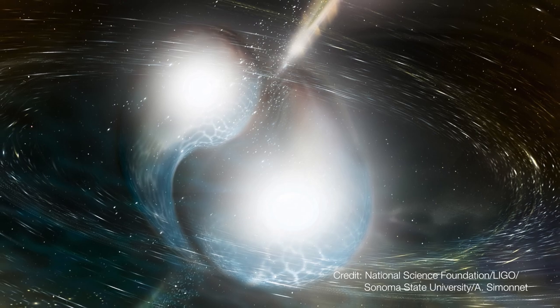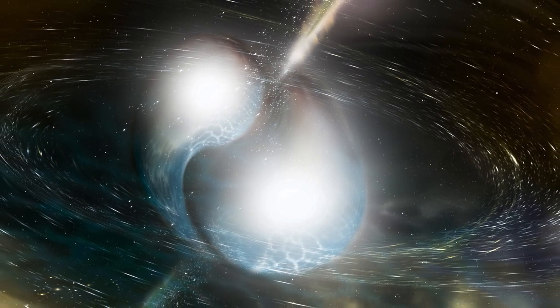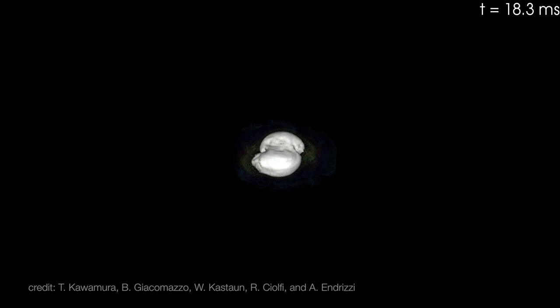A binary neutron star system consists of two neutron stars which are very dense types of stars, the densest material we know in the universe.